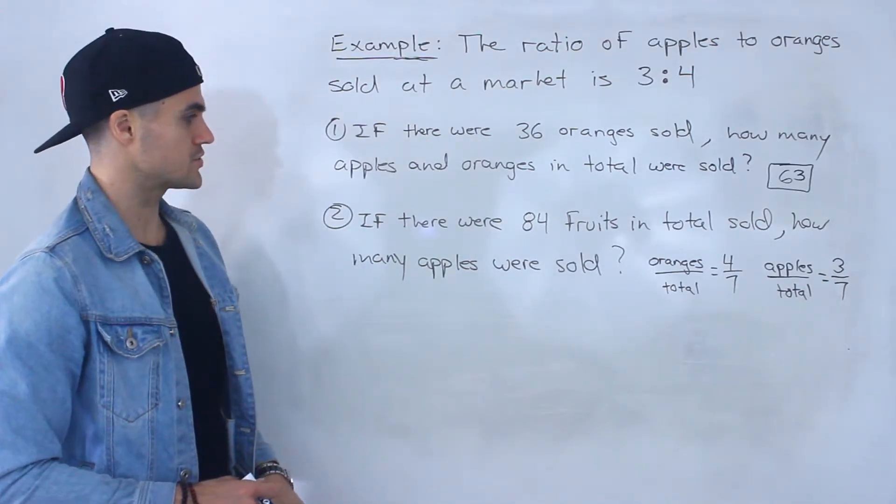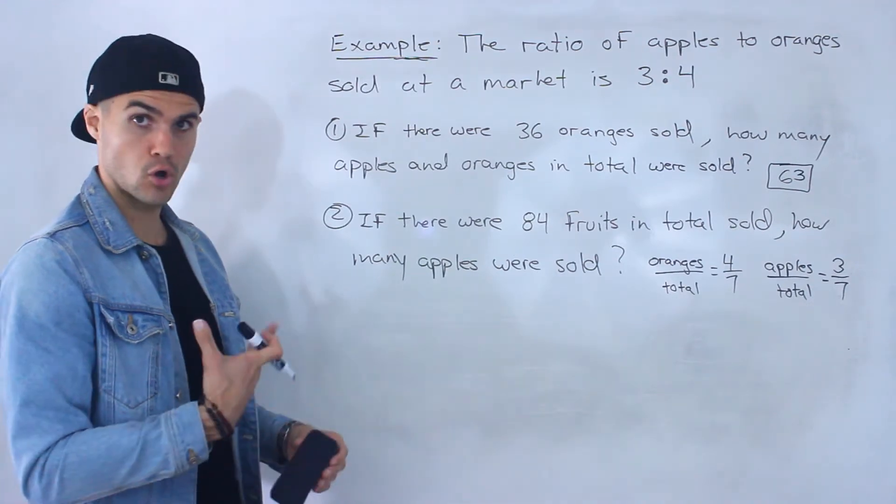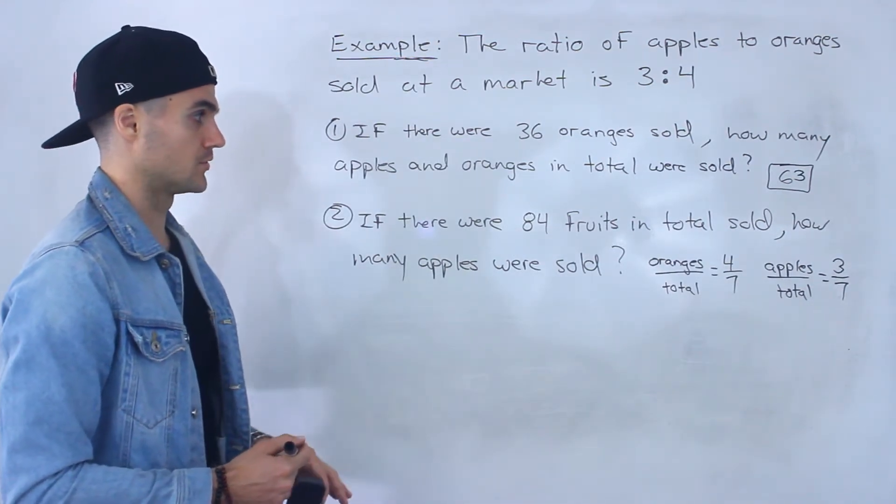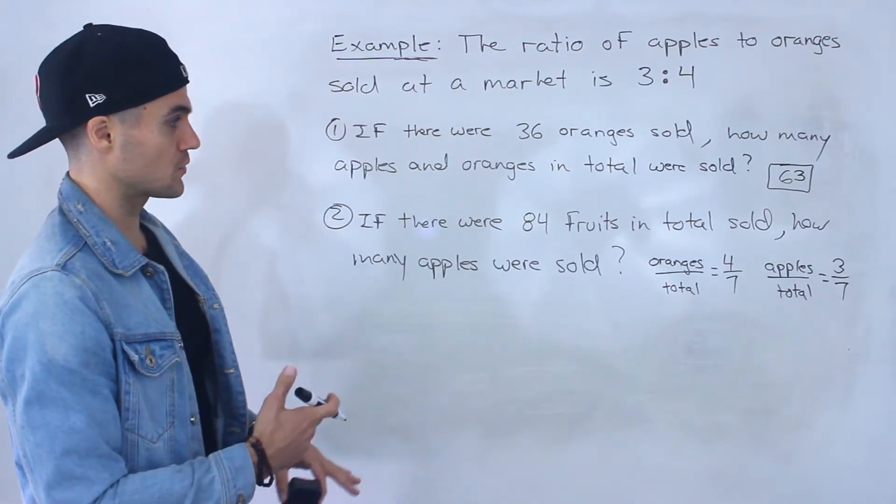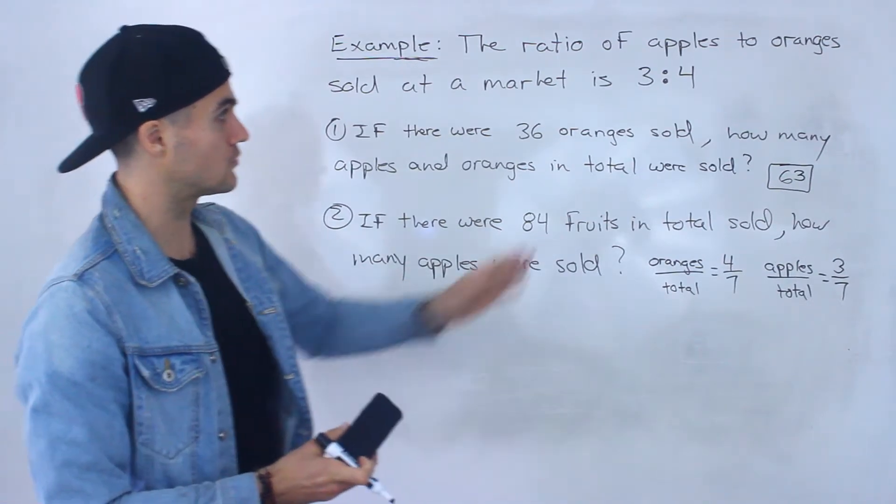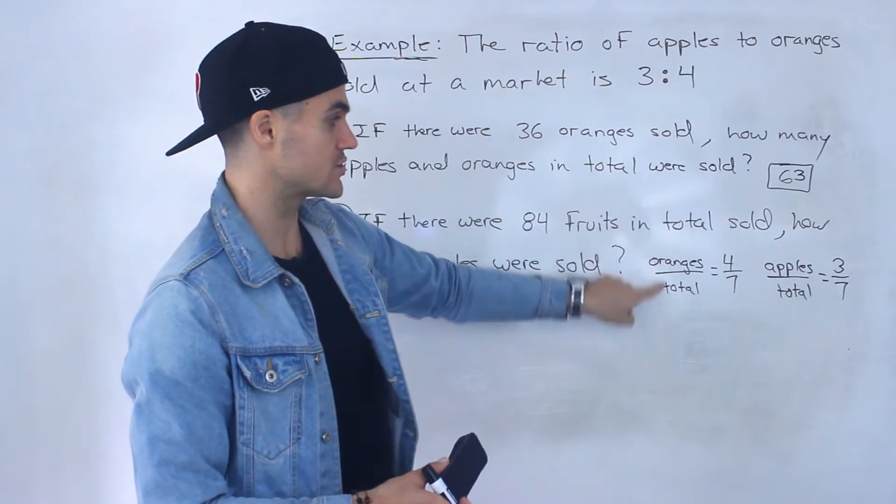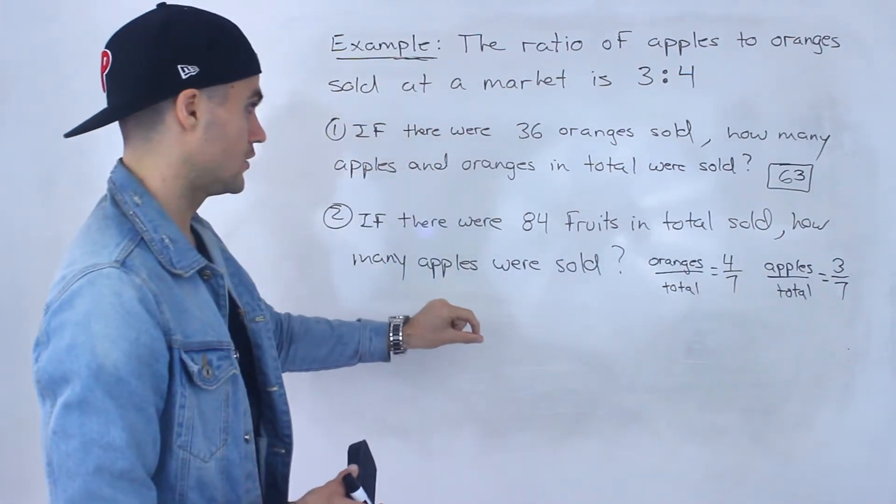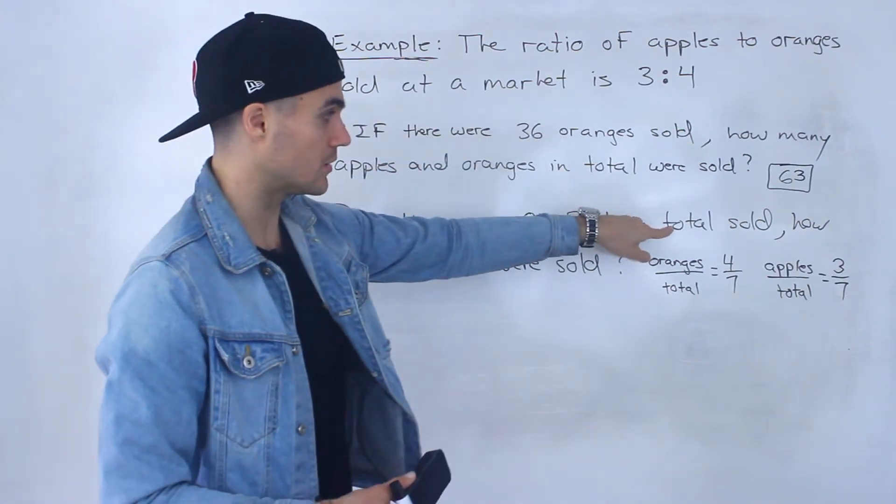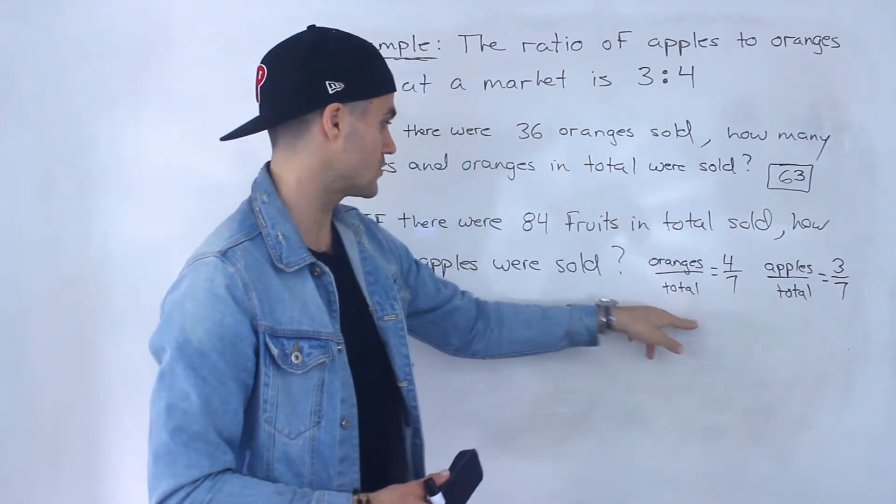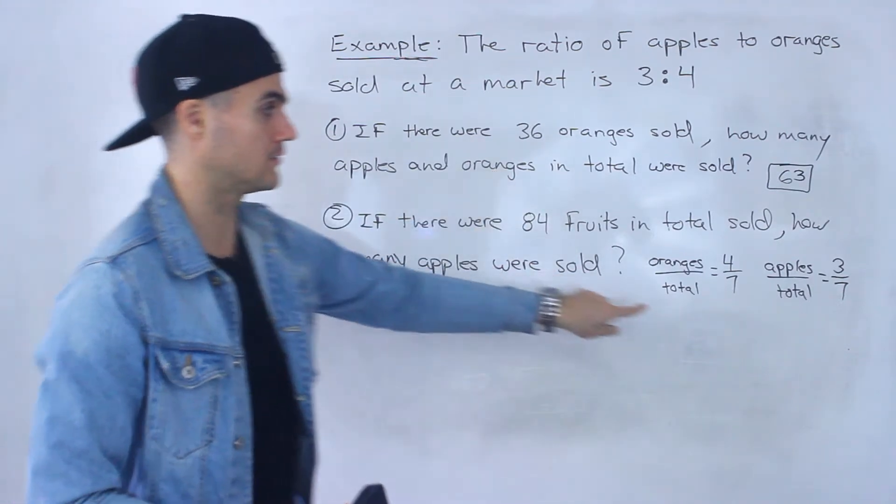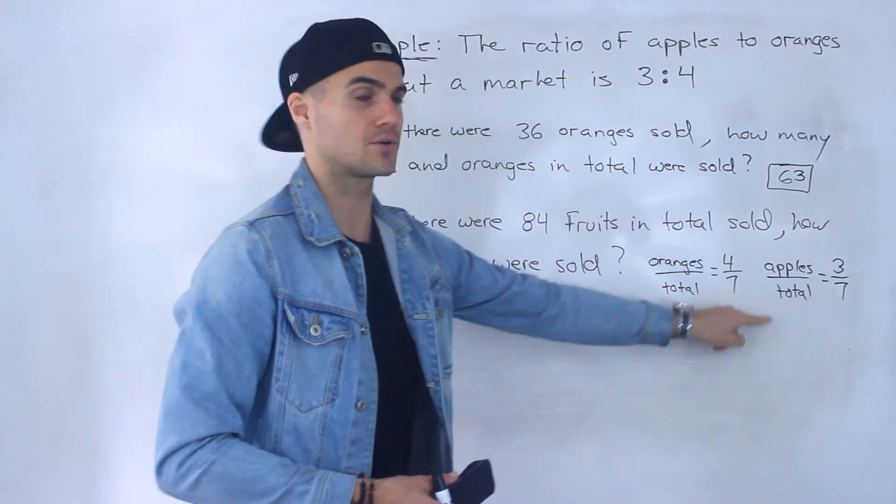Now moving on to number two, if there were 84 fruits in total sold, how many apples were sold? Which of these ratios will we use for this question? The ratio of apples to oranges, oranges to total, or apples to total? Well, notice that we're given the total amount, so we know it's going to be one of these ratios. And they're asking how many apples were sold given a total amount. So we're going to be using that ratio right there.